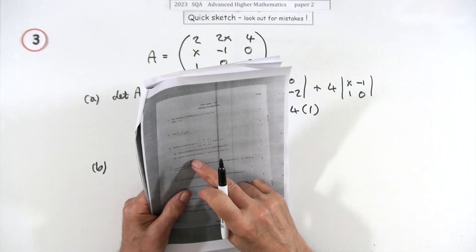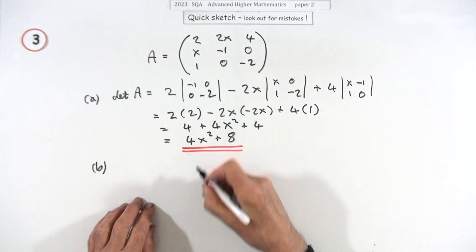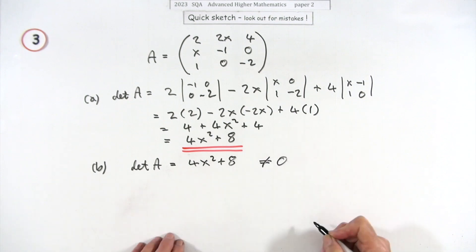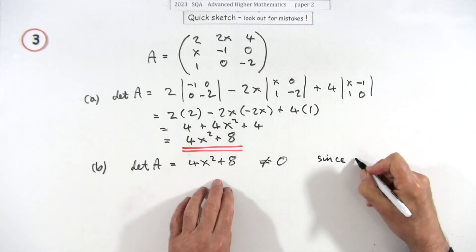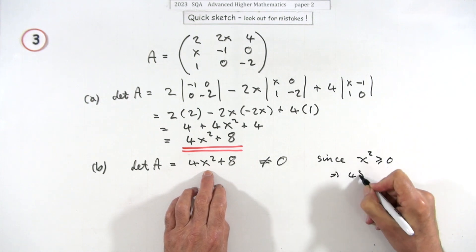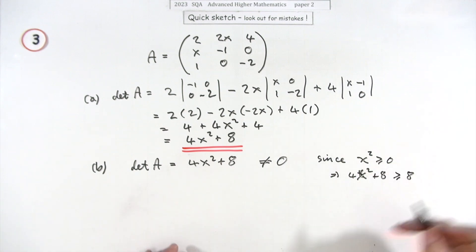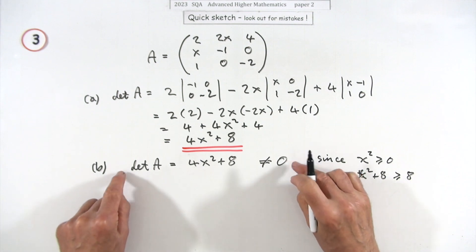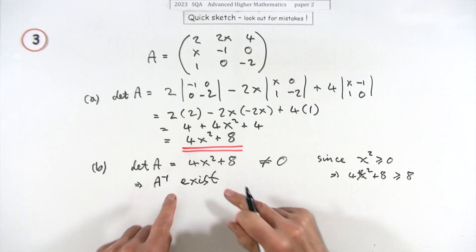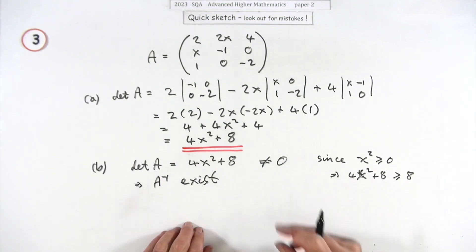Part B, one mark: hence determine whether the inverse exists for all values of x. The determinant of A equals 4x² + 8, which can never equal zero. Since x² is always greater than or equal to zero, 4x² + 8 must be greater than or equal to 8. Because the determinant is never zero, the inverse matrix will always exist — since finding the inverse requires dividing by the determinant, and dividing by zero is not possible.